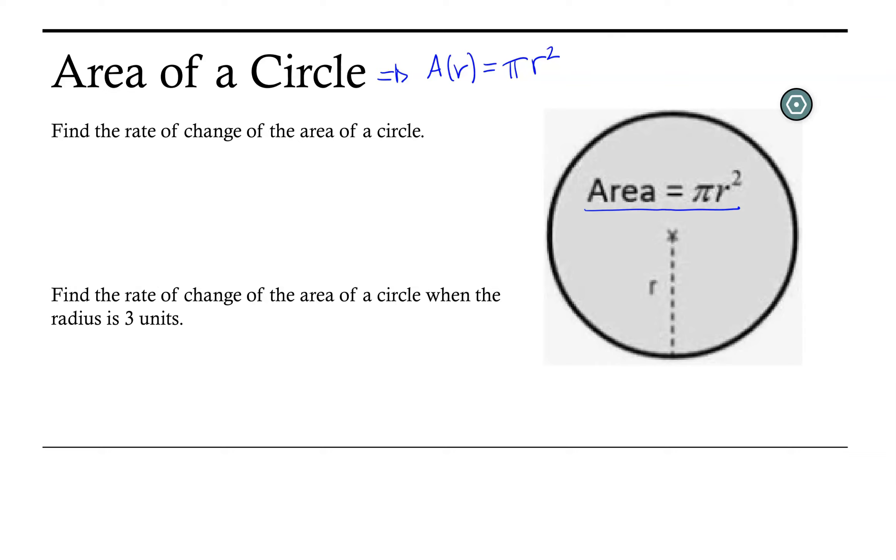Now let's go ahead and find the rate of change in the area of the circle. So keeping in mind that radius is our independent variable, the rate of change of the area of the circle will be the change in area over the change in radius, or dA/dr.